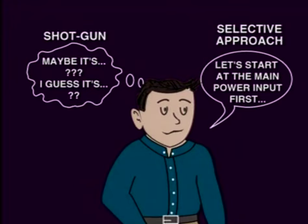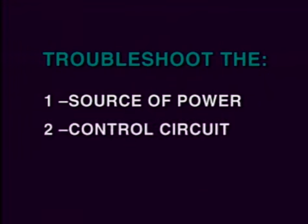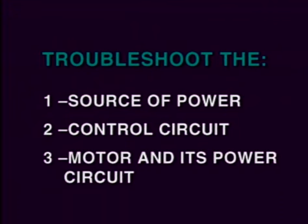There are two ways to try to find a problem: one is by a shotgun method, in which we hope to hit it by luck or by guessing, or we can go through a selective and rational process following an approach program. To speed up finding the problem, we can define three major areas: first, troubleshoot the source of power; second, troubleshoot the control circuit; and third, troubleshoot the power circuit of the motor and the actual motor itself.